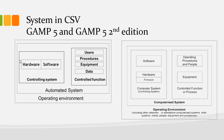In GAMP 5, firmware, which is essentially embedded software, was implicitly treated as a part of the hardware element. It was assumed in the first edition of GAMP 5 that hardware included firmware, although this was not explicitly stated.